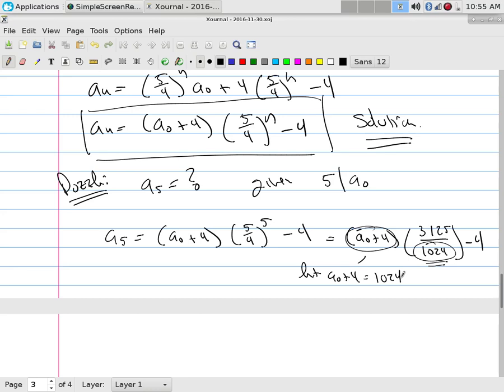What does that make a_0? 1020. Is 1020 divisible by 5? Yes, so it satisfies it.